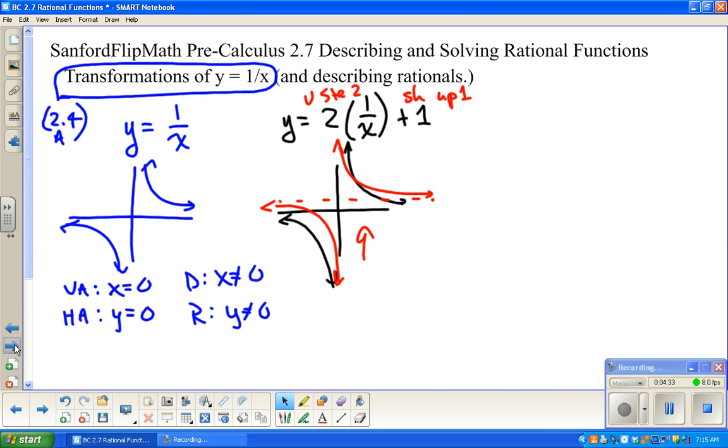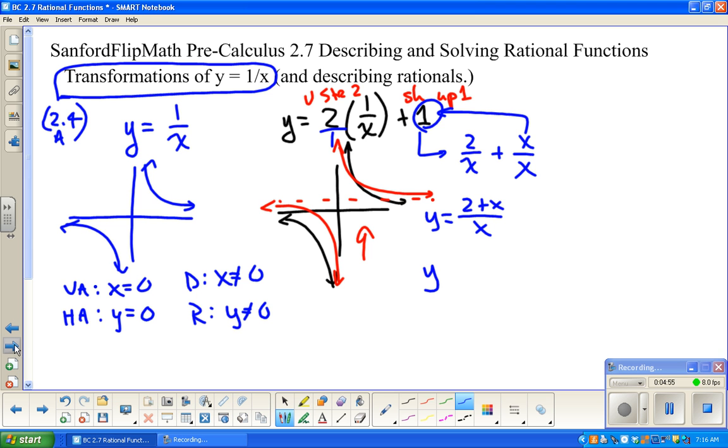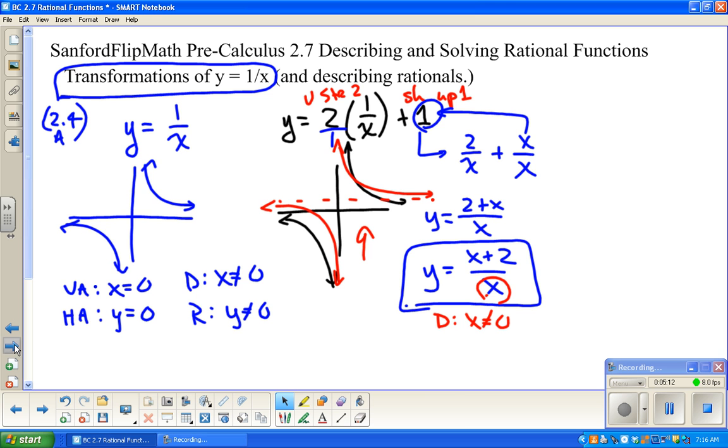So vertical stretch of 2, shift up 1. So let's say transformation on 1 over x. Now, here's the problem. It's never going to look like that. So instead, it would be something like, if I do 2 over 1 times 1 over x, that's going to be 2 over x plus x over x. Think about where that x over x came from. So this is really 2 plus x over x. And normally, we would probably write that x plus 2 over x.